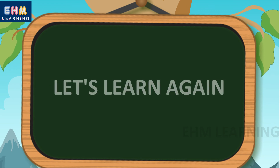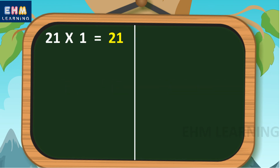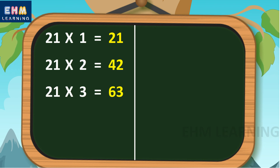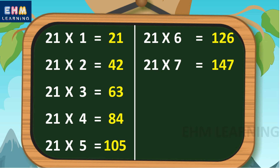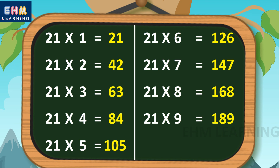Let's learn again. 21 ones are 21. 21 twos are 42. 21 threes are 63. 21 fours are 84. 21 fives are 105. 21 sixes are 126. 21 sevens are 147. 21 eights are 168. 21 nines are 189. 21 tens are 210.